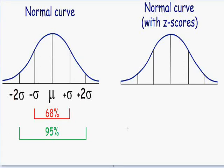Welcome to my video on z-scores. Z-scores are just another way of expressing average and standard deviation. If you have a z-score of 1, that just means that you're one standard deviation above the average. Or if you have a z-score of negative 1, that means that you are one standard deviation below the average.